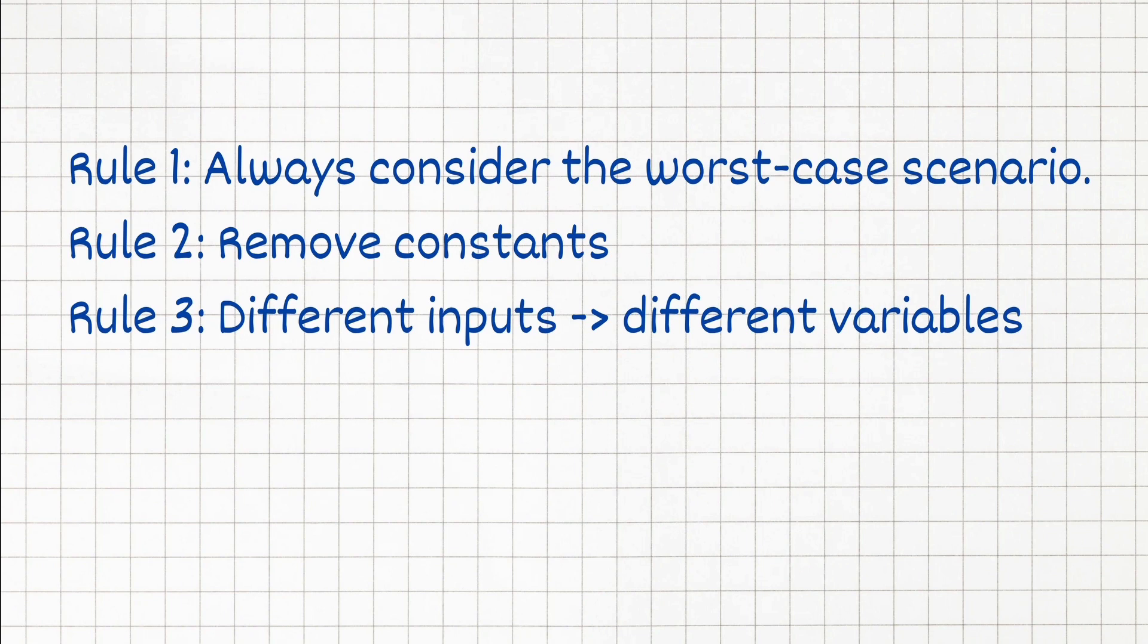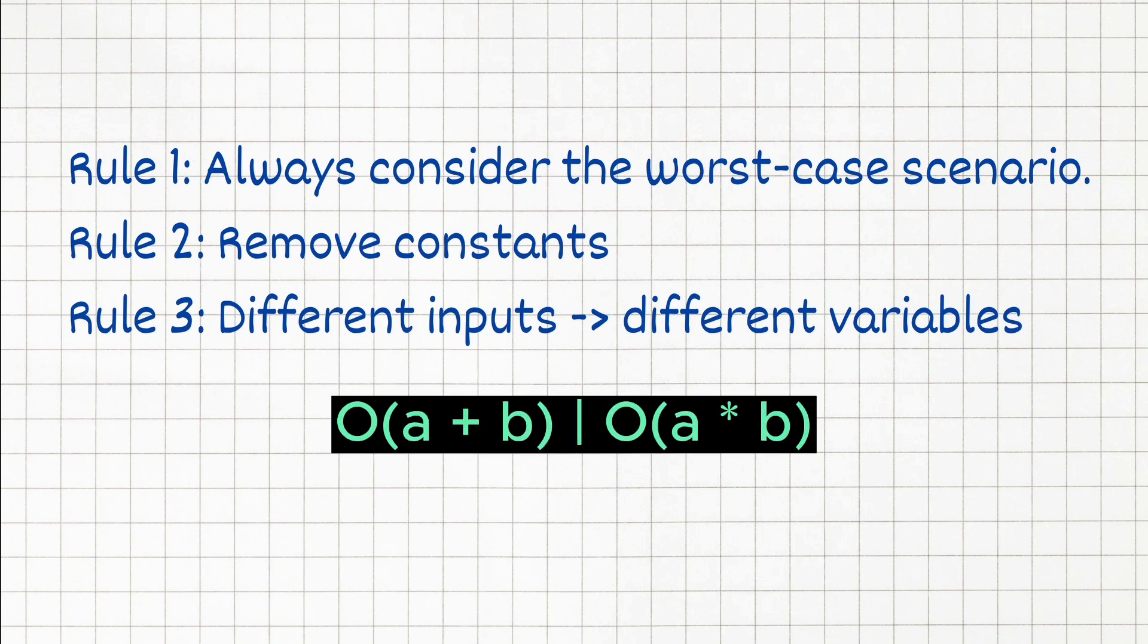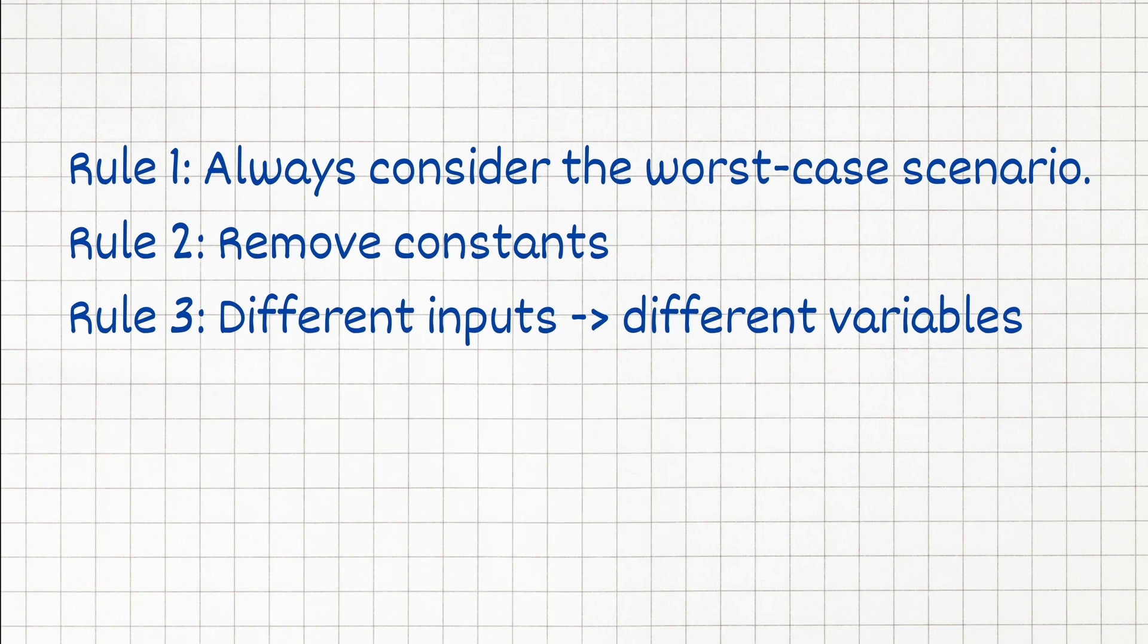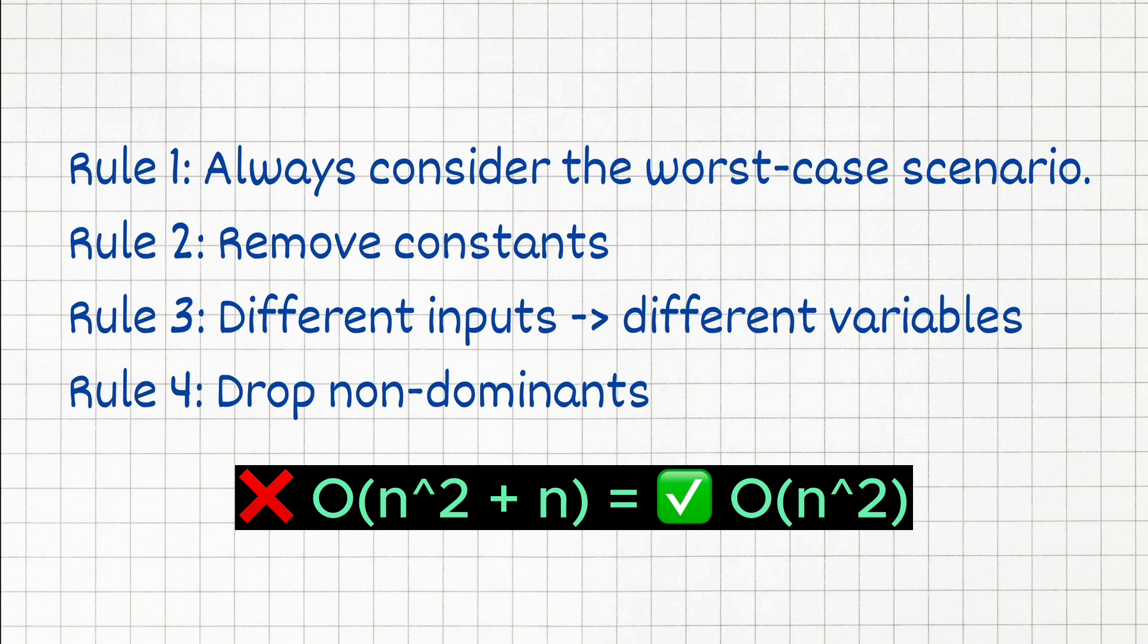Next for different inputs you should have different variables, so if you have two different inputs, we'd express it as O of A plus B or O of A times B instead of O of N. And lastly you have to drop non-dominant terms, which means that when considering complexity, we focus on the parts that have the most impacts. For example if you have O of N squared plus N, you need to drop the N and say that it's O of N squared complexity.